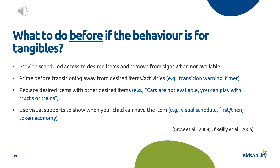For behaviors maintained by tangibles or access to an item, you might try providing scheduled access to a desired item and removing the item from sight when it's not available. Give a warning before transitioning away from a desired item or activity — for example, using a timer for when iPad time is going to be all done. Replace desired items with other desired items: cars are not available but you can play with trucks or trains. Or if you need to take something away, use a reinforcer exchange: 'I'm taking the iPad and here's a gummy bear.' You can also use visual supports like a first-then board or a token board.